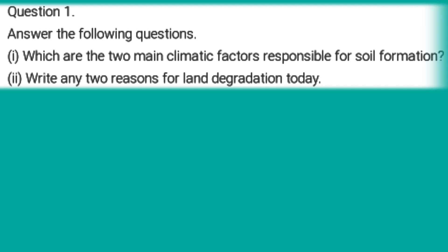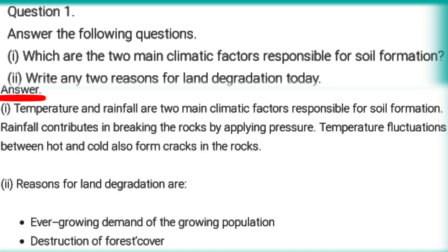First question: Which are the two main climate factors responsible for soil formation? Answer: Temperature and rainfall are the two main climatic factors responsible for soil formation. Rainfall contributes to the breaking of rocks by applying pressure. Temperature, functioning between hot and cold, also forms cracks in the rock.